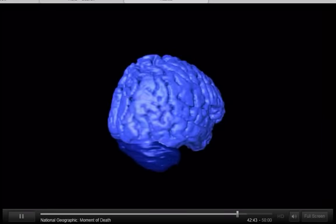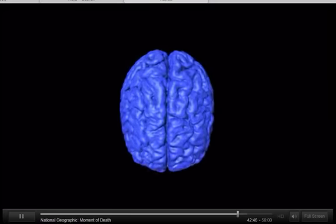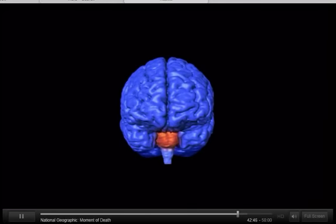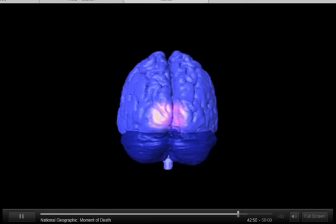So the visual cortex, the back part of the brain, or the superior colliculus, which is considered part of the brain stem, if they are activated, all you see is light.